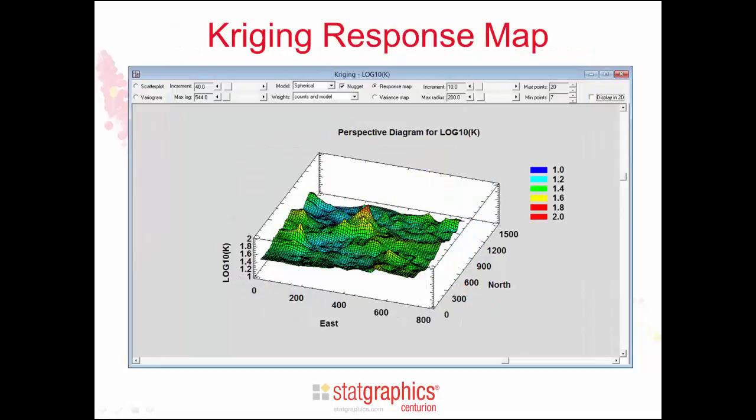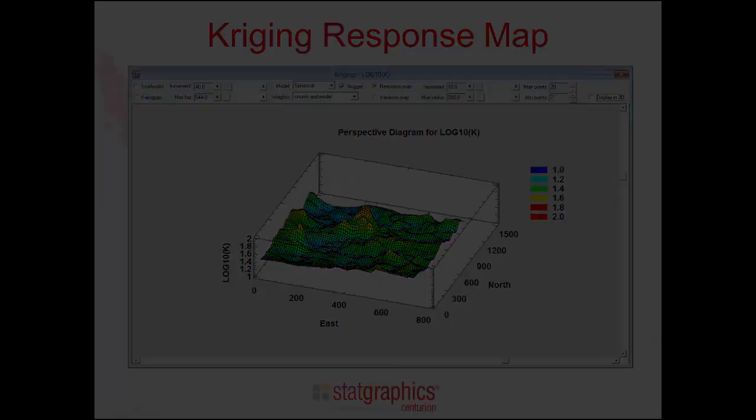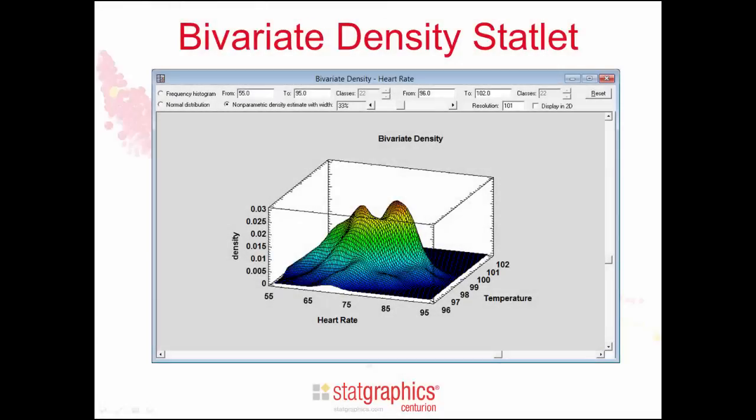Here's a map created by the Kriging statlet. Kriging is used to estimate the distribution of a variable based upon data collected at different locations throughout a physical area. Finally, here is an estimated bivariate density using a non-parametric loess smooth. It estimates the joint distribution of two variables. Users can change the smoothing parameter and instantly watch the estimates change.